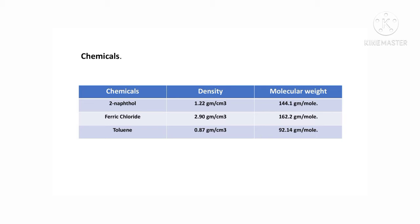The chemicals required for this experiment are: 2-naphthol, having density 1.22 g/cm³ and molecular weight 144.1 g/mol; and ferric chloride (FeCl₃), having density 2.90 g/cm³ and molecular weight 162.2 g/mol.